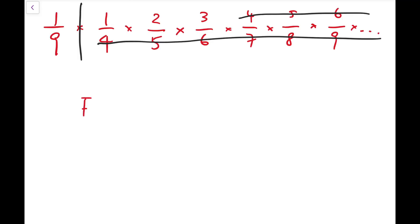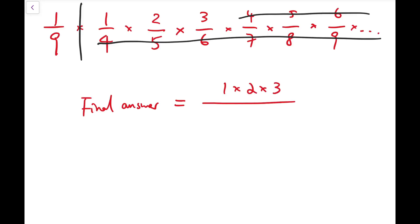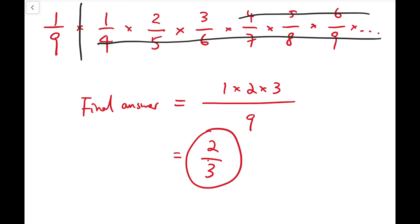So what's left? As the product goes to infinity, our final answer has at the top just 1 times 2 times 3 remaining, and at the bottom just the 9 from the first fraction. If we simplify, we get 2 over 3, and this is our final answer.